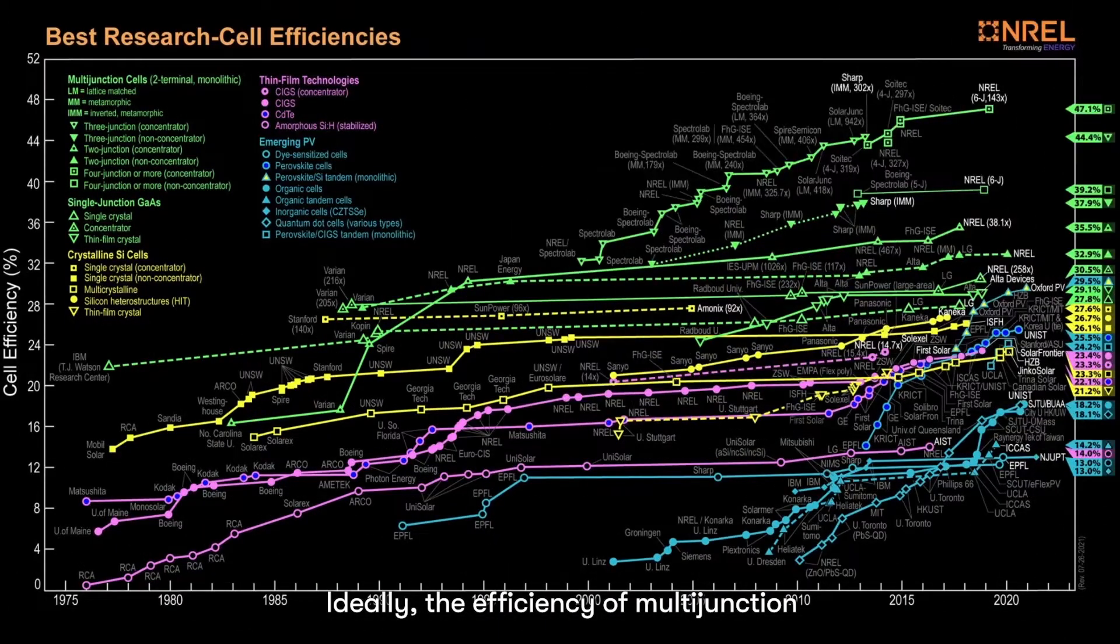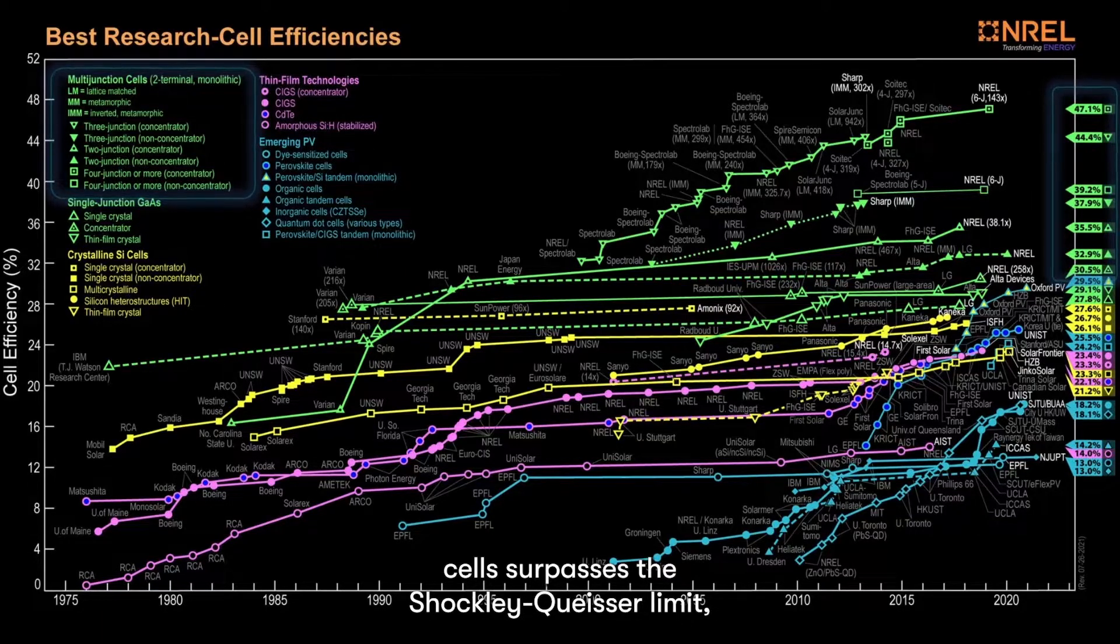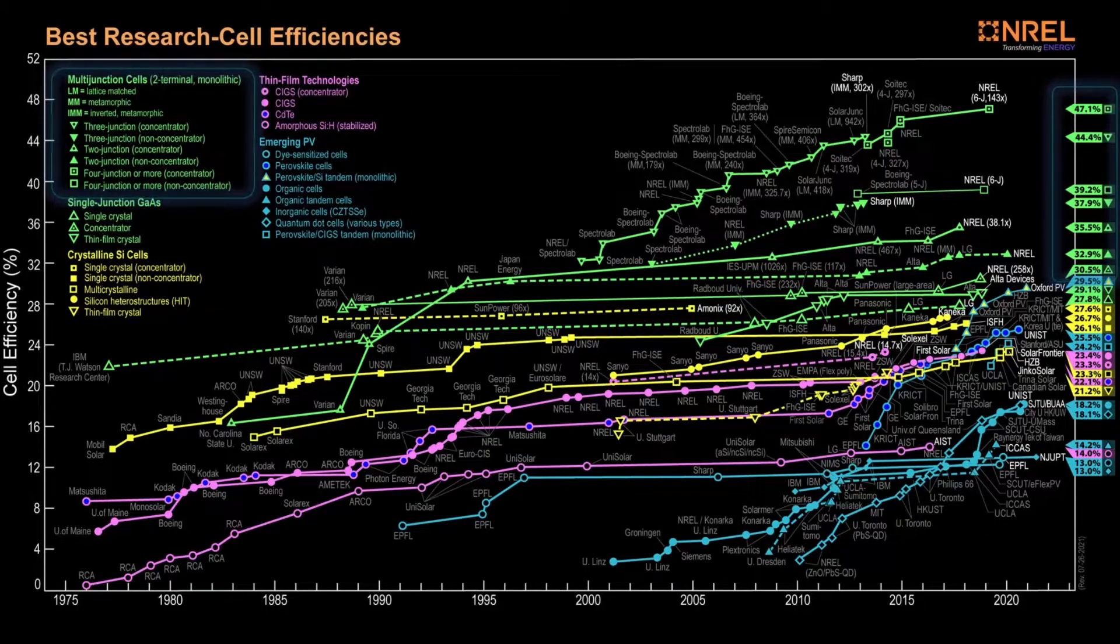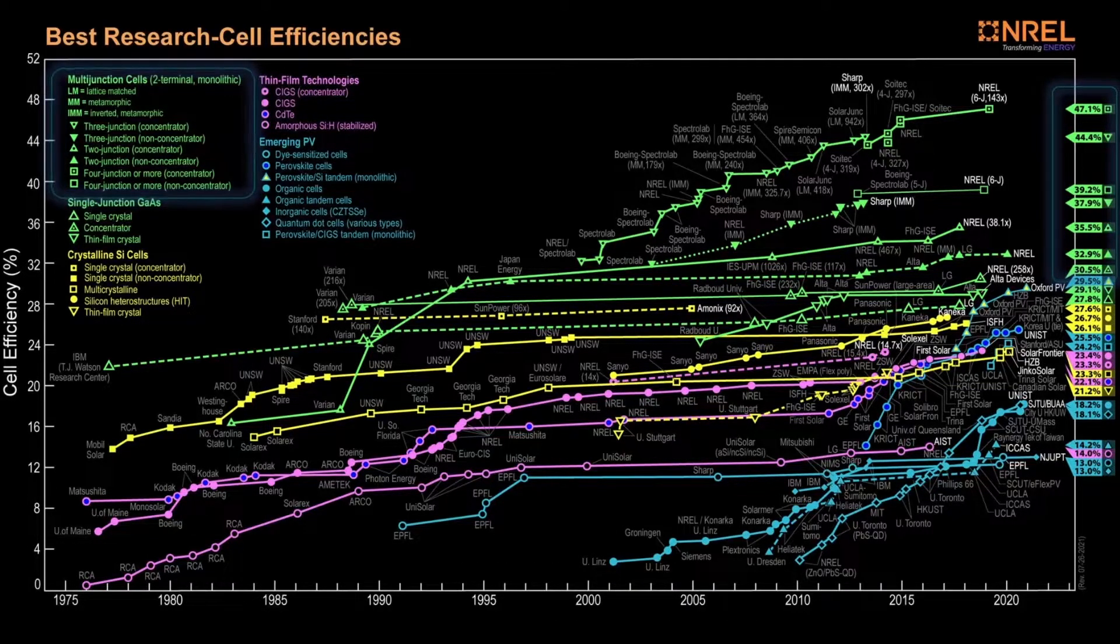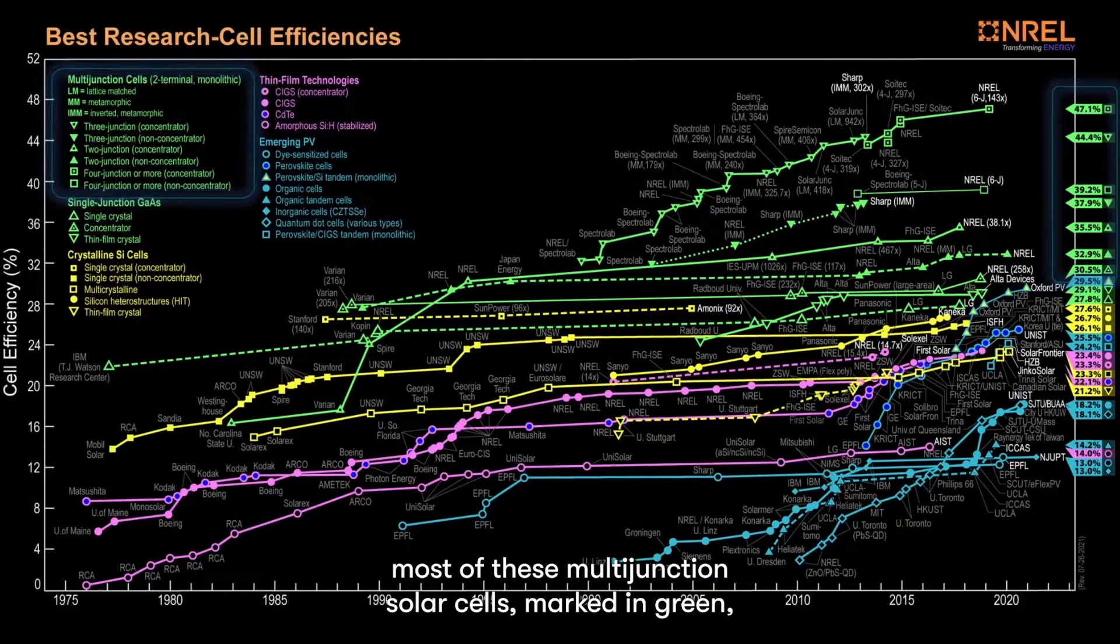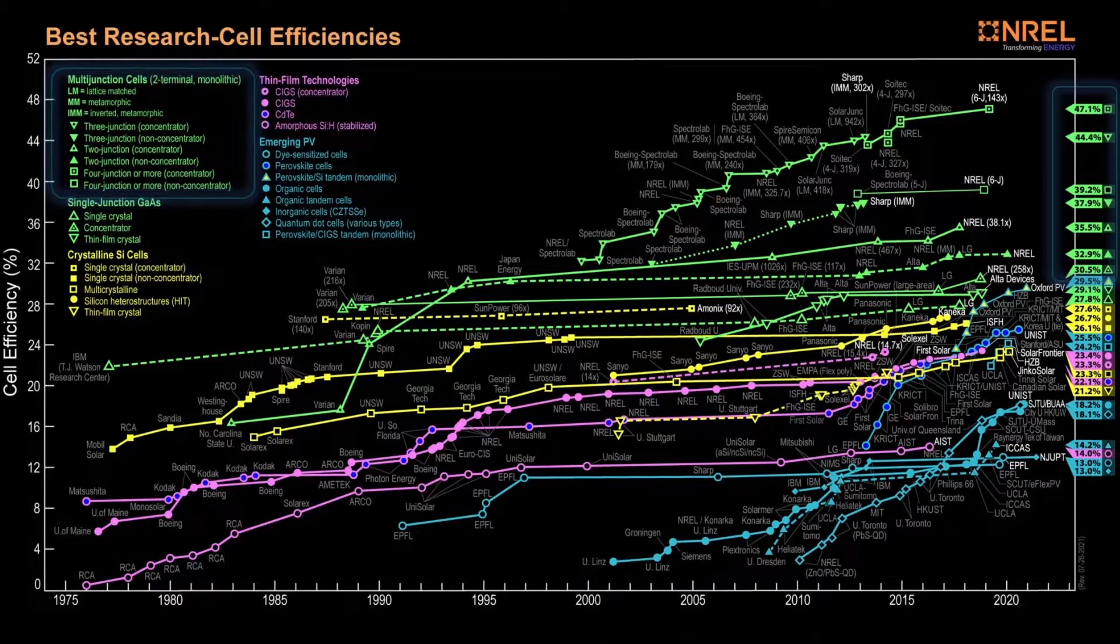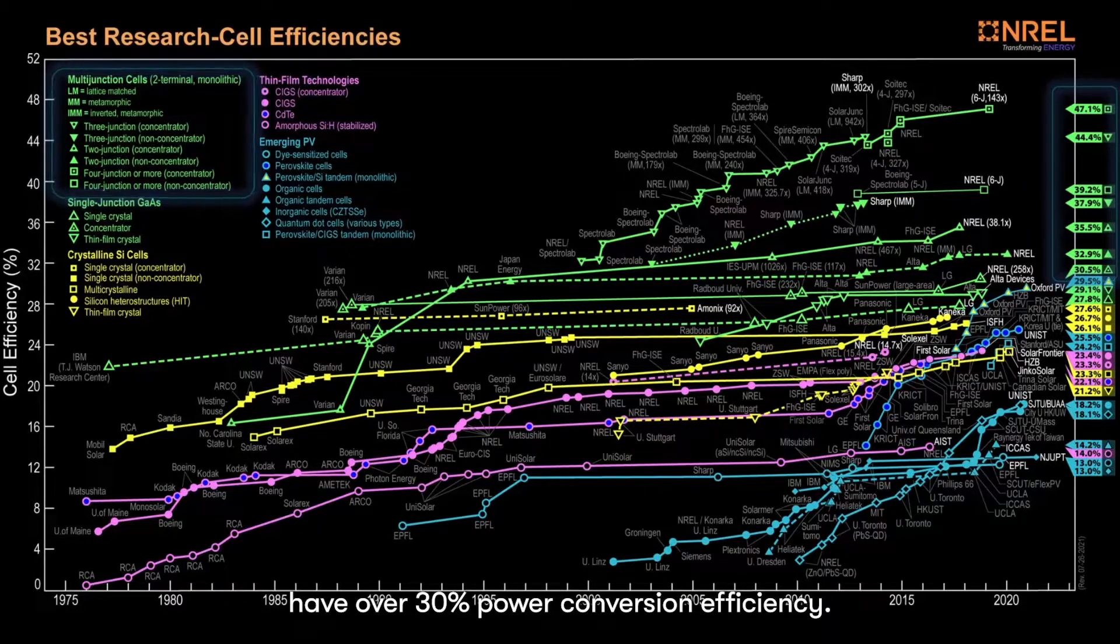Ideally, the efficiency of multi-junction cells surpasses the Shockley-Queisser limit. And hence, as shown in the NREL solar cell efficiency chart, most of these multi-junction solar cells, marked in green, have over 30% power conversion efficiency.